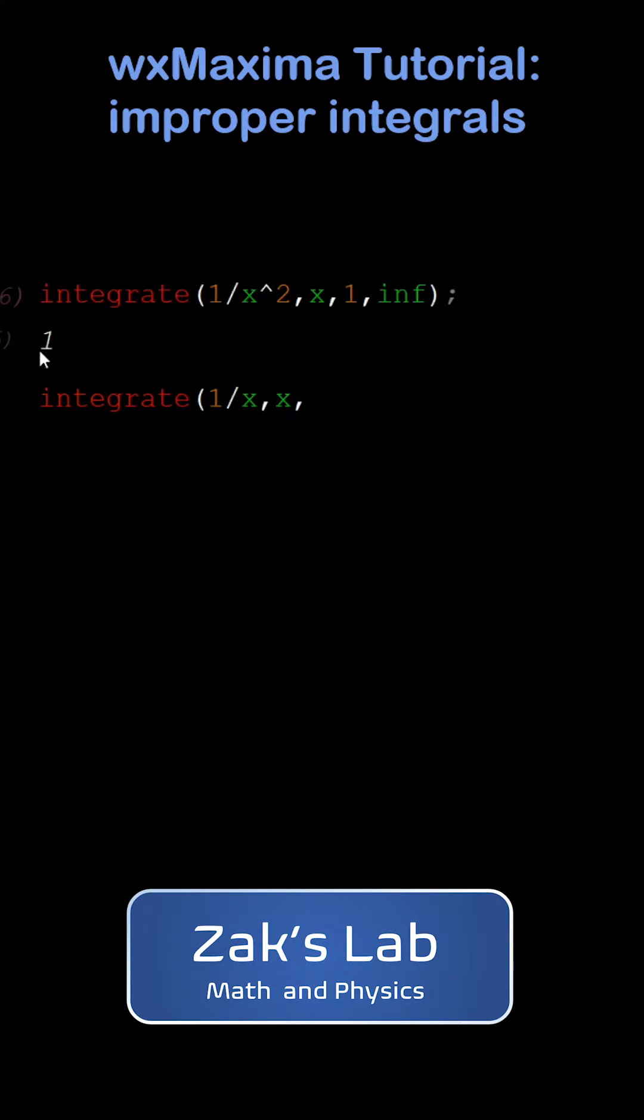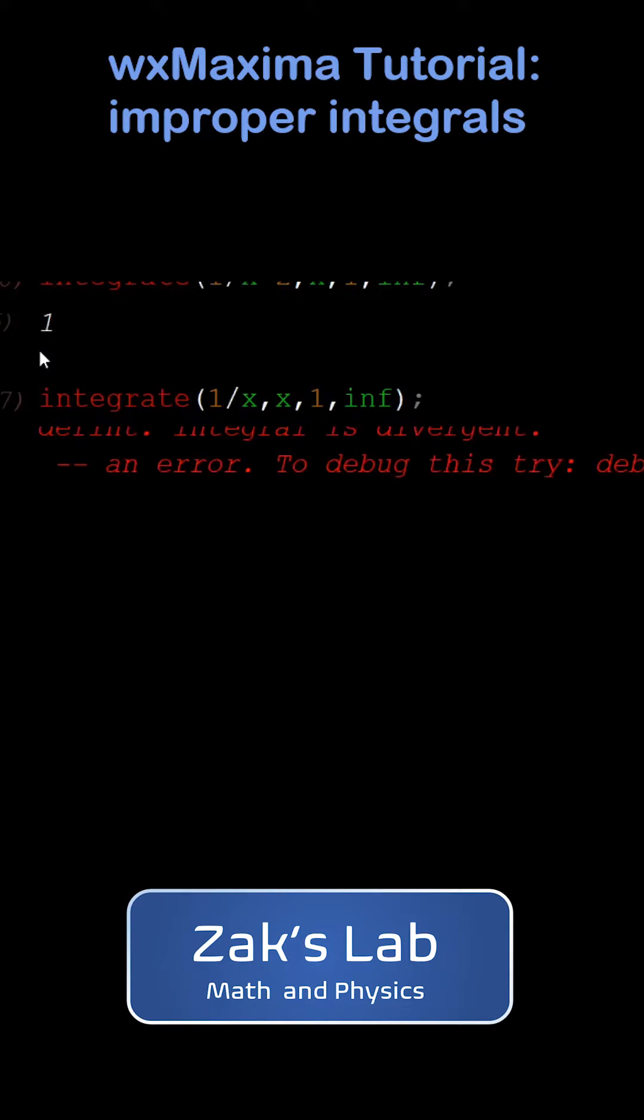Let's look at what happens if we deal with a function that's actually divergent at infinity. The anti-derivative of 1/x would give me natural log x, and as x goes to infinity that blows up to infinity. Let's see what Maxima says. It throws an error and says the integral is divergent.